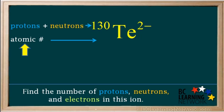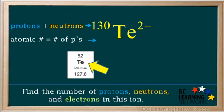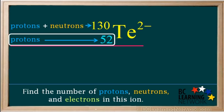Next find the atomic number of tellurium, which is equal to the number of protons, and write it here on the bottom left of the symbol. Find tellurium on the periodic table. Its atomic number is 52, so write 52 here. So the number of protons in this ion is 52.